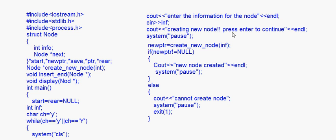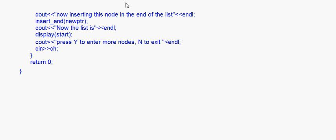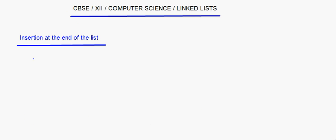The system will pause — the user has to press a key and then it will proceed further. New ptr is equal to create new node with the info entered. This is the point where the function create new node is called, and whatever information was entered by the user is passed on to this function.